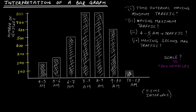What is the traffic between 4 to 5 am? Looking at that time interval's bar, the traffic is 200. For the second maximum traffic: after the two bars at 800, the next tallest bar is for the 9 to 10 am interval, which reaches 600. So the time interval with second maximum traffic is 9 to 10 am with 600 vehicles.